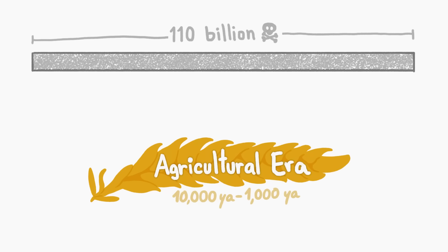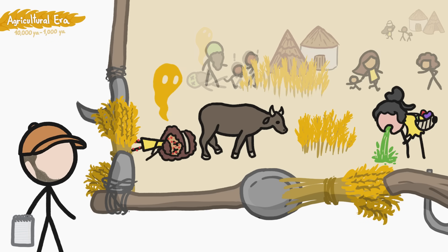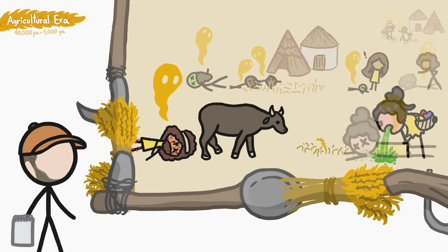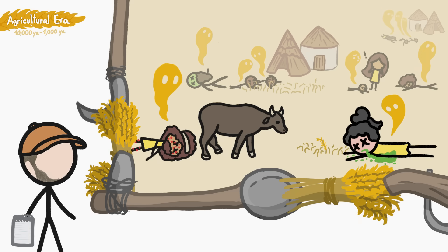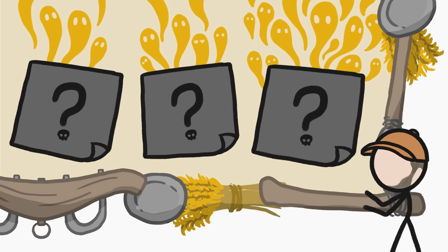Next was the agricultural era, during which another 60 billion-ish people lived and died. Living with livestock caused deaths from animal-borne diseases like smallpox and tuberculosis, and reliance on crops caused deaths from mass starvation when the crops failed. And since sanitation hadn't improved much, people kept dying from a wide variety of infections and parasites. And those three other killers were still killing people.